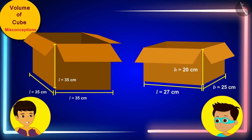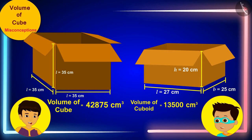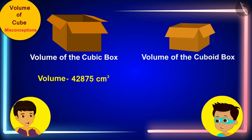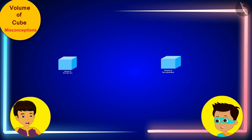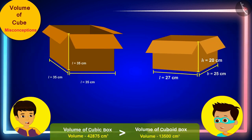Manas and Thomas also found the volumes of both boxes. The volume of the cubic box is 42,875 cubic centimeters and the volume of the cuboid box is 13,500 cubic centimeters. This means the volume of the cubic box is much higher than the volume of the cuboid box. It is a very common misconception that between two identical-looking cube and cuboid shaped objects, the volume of the cuboid is always greater than the volume of the cube — but as we have just seen, this is not always necessarily true.